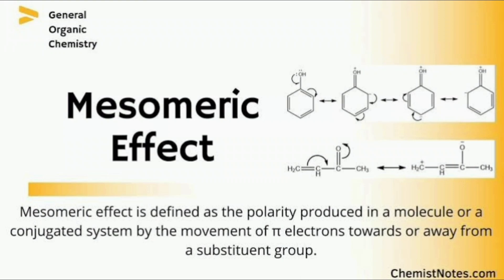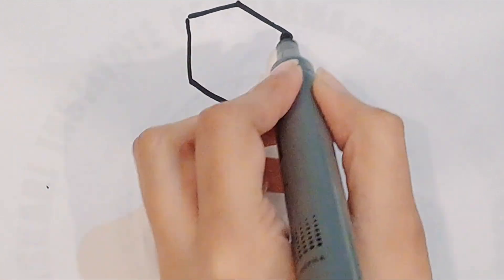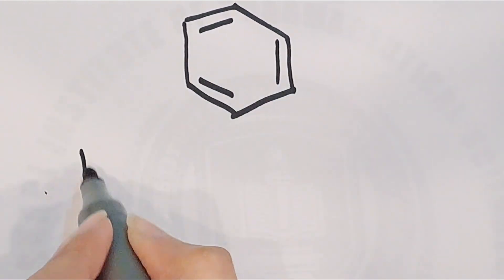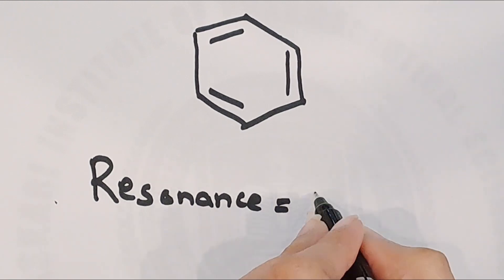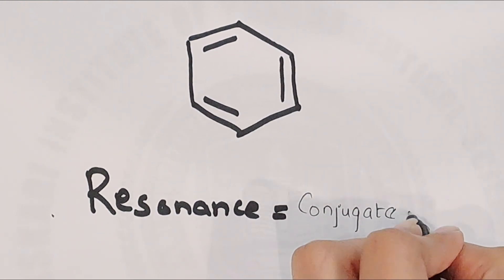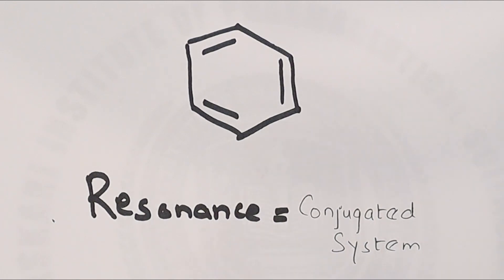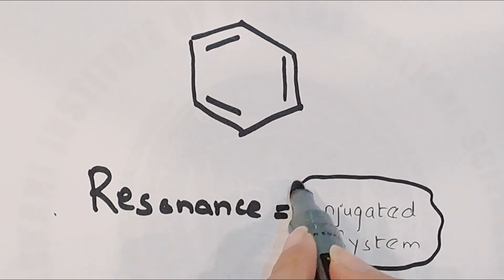Welcome to my channel. Today my topic is mesomeric effect. As we know, a covalent compound has alternate single and double bonds. For resonance we need a conjugated system. We can say that resonance equals the conjugated system. For mesomeric effect, the first condition is resonance and the second condition is resonance having a functional group.